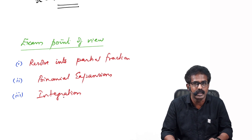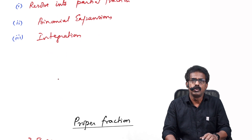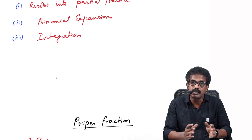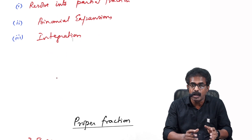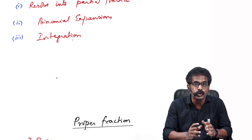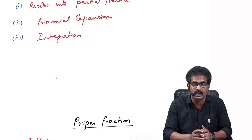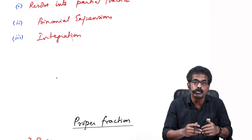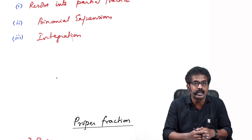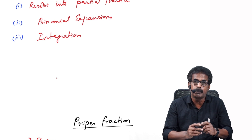There are two types of fractions: proper fractions and improper fractions. If the degree of the numerator is smaller than the degree of the denominator, it is a proper fraction. If the degree of the numerator is more, we call it an improper fraction.